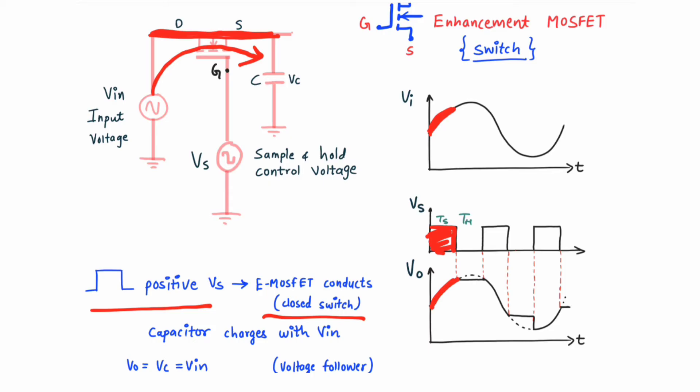So Vc is equal to Vin, and Vc is also equal to Vo — the output voltage. Whenever there is a positive pulse, your output will follow the input. In every positive pulse, your output will be the same as your input.